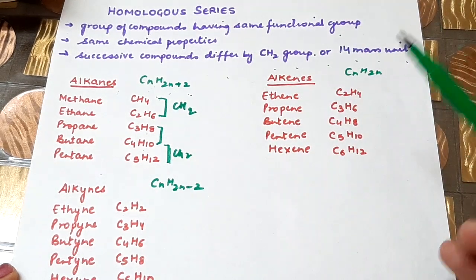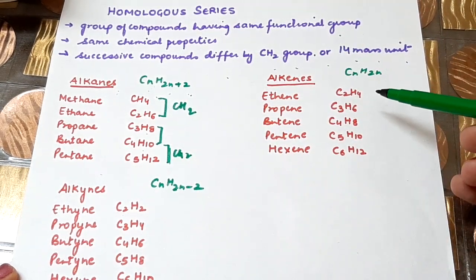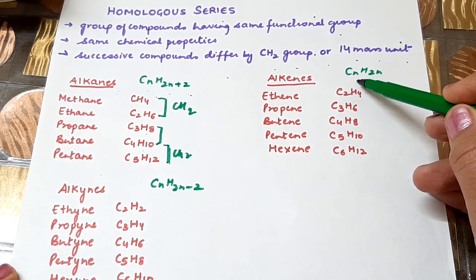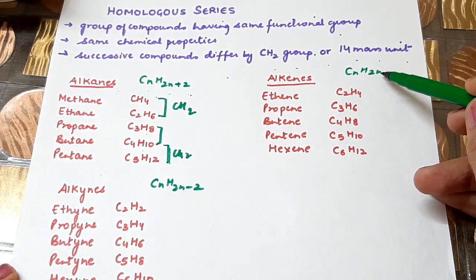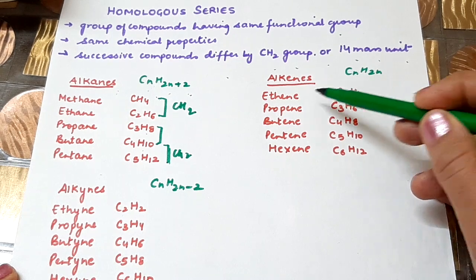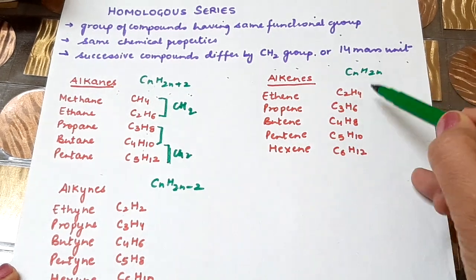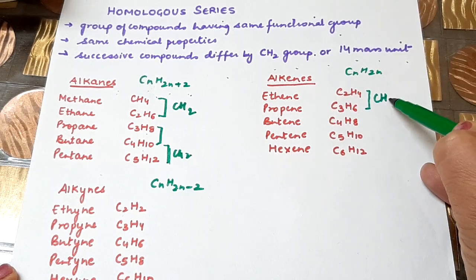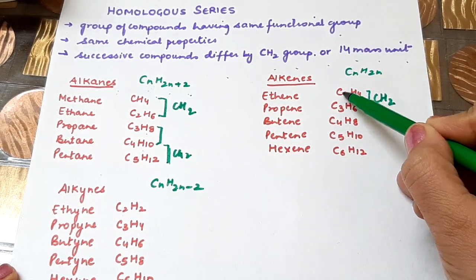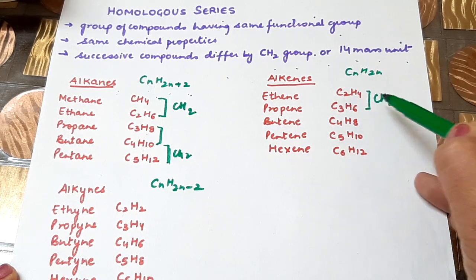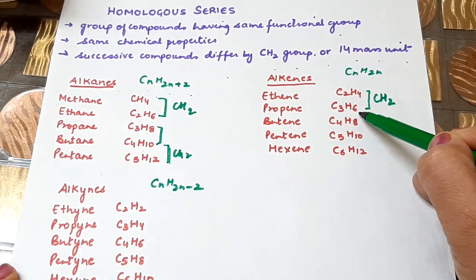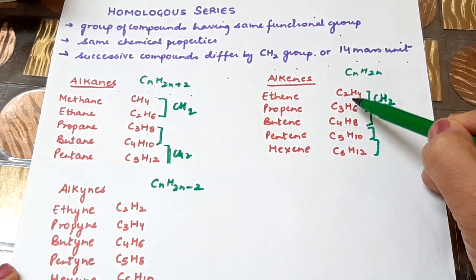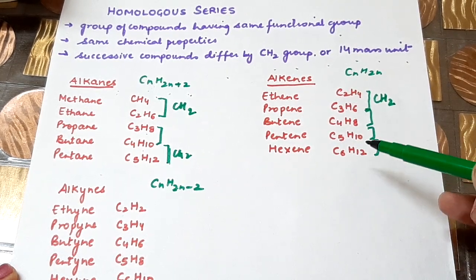Same for alkenes as well. The general formula for alkenes is CnH2n. That is, if we put N=2, it becomes C2H4. In the alkene series, the difference between successive compounds is also CH2 — adding CH2 to C2H4 gives C3H6, and the same pattern continues. So this is the homologous series of alkenes.